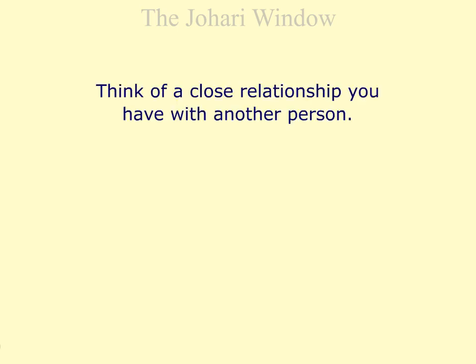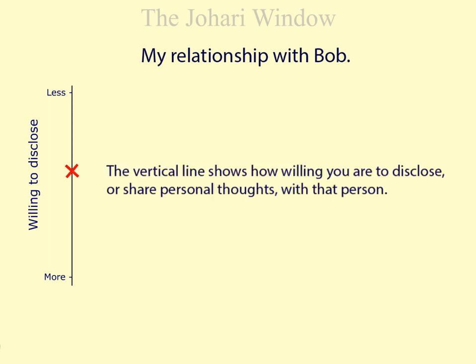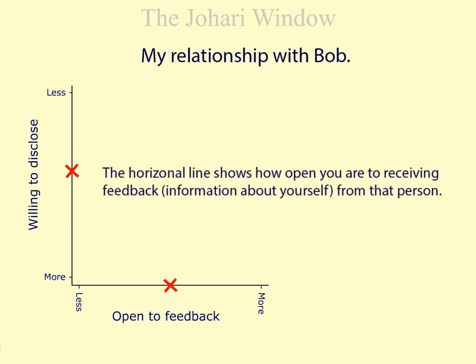Think of a close relationship you have with another person — for example, my relationship with Bob. The vertical line shows how willing you are to disclose or share personal thoughts with that person. The horizontal line shows how open you are to receiving feedback, information about yourself, from that person.